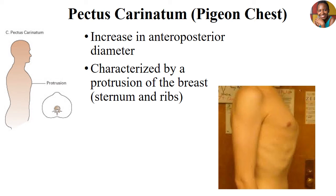The pigeon chest can develop from injuries or abnormalities like tumors that grow and compress the ribs, causing protrusion. Most commonly, however, it is related to orthopedic conditions that lead to bone abnormalities, protruding the sternum and the ribs.